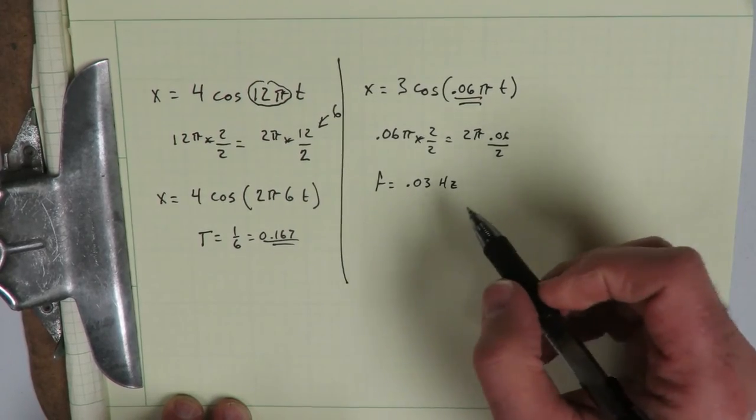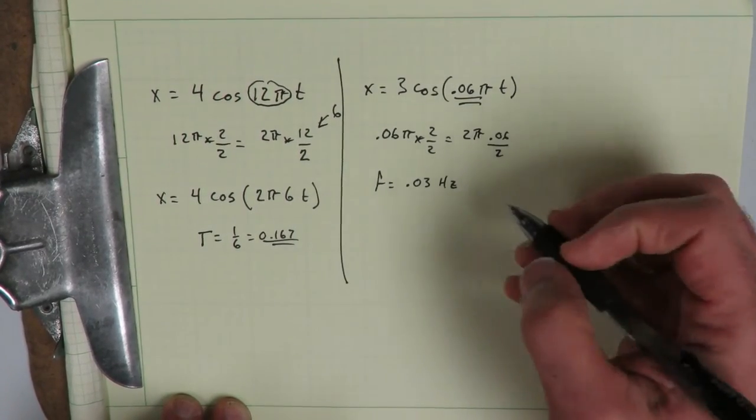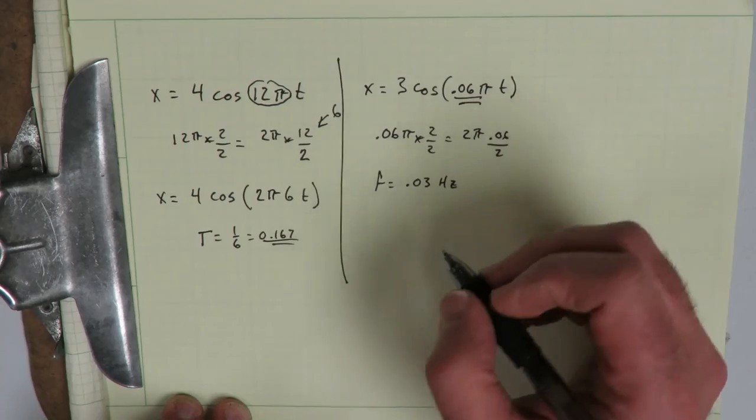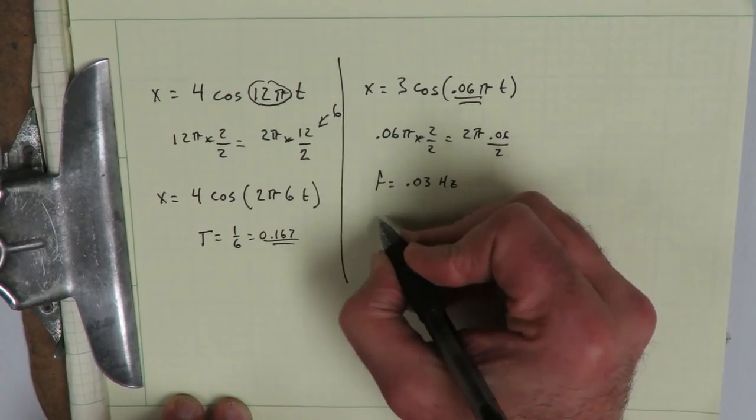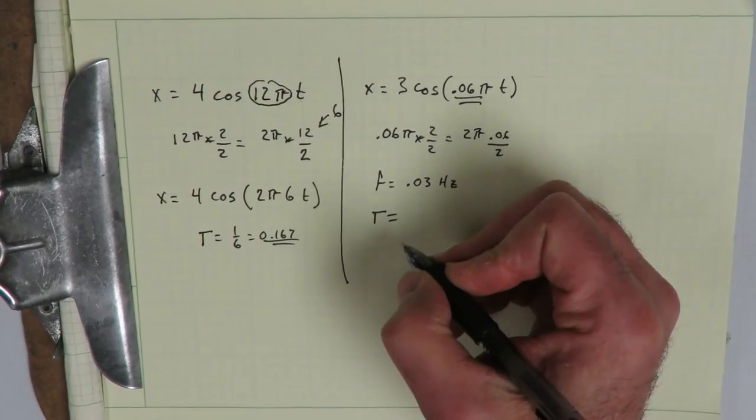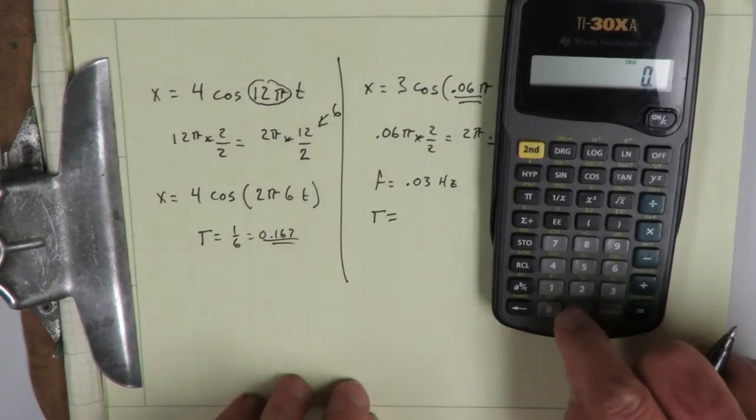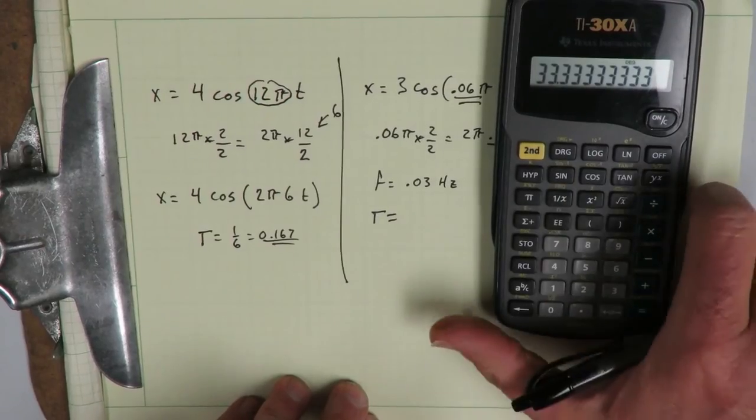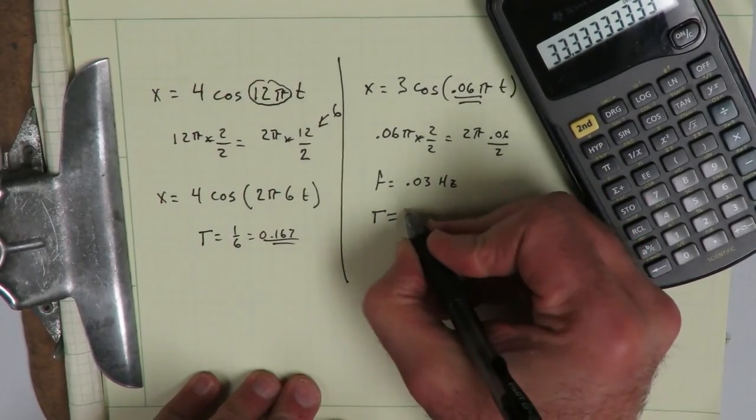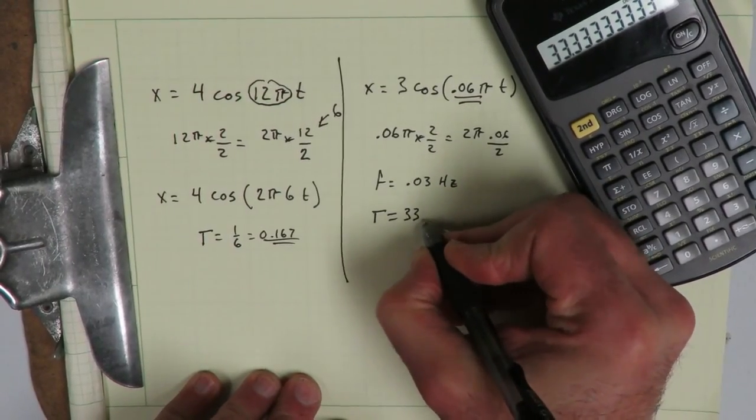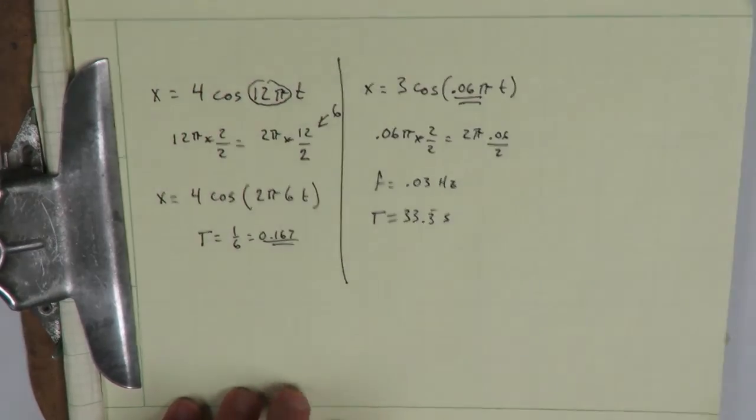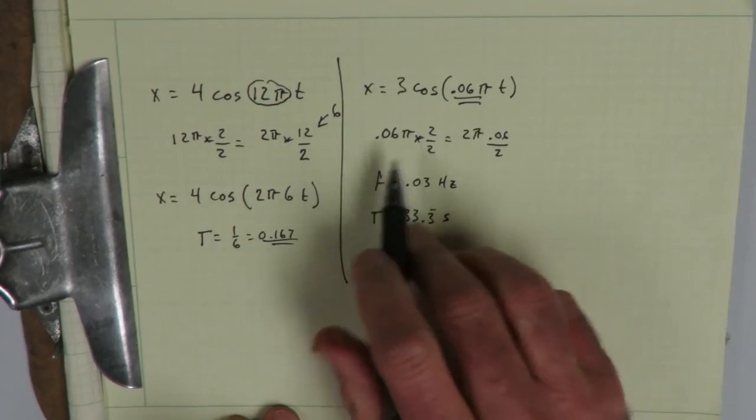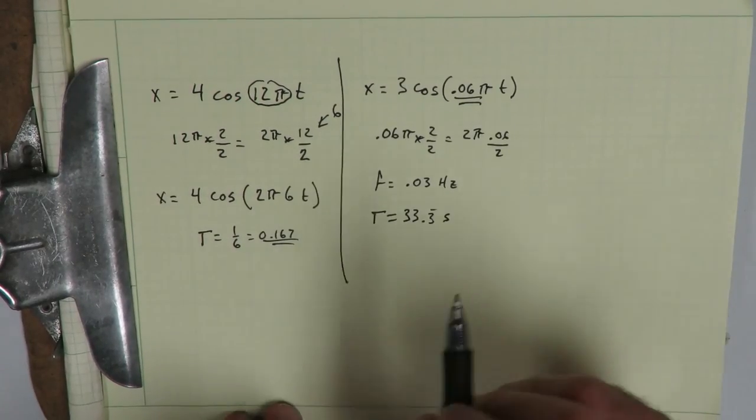It takes a long time to go through one cycle. And if we take the inverse of that, then t is equal to 1 over 0.03, which is equal to 33.3 seconds. So it takes a little over half a minute for this thing to get through one complete cycle.